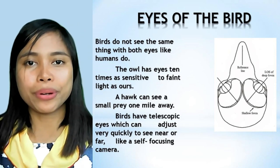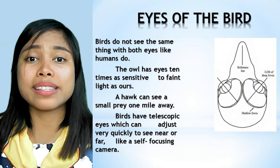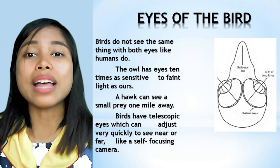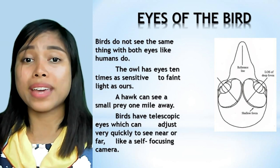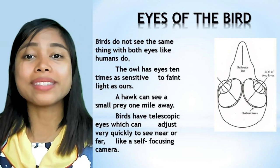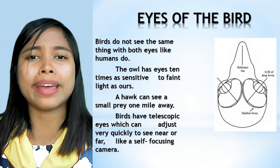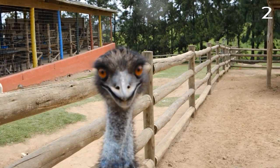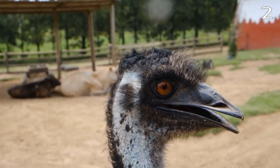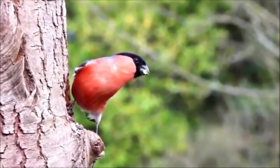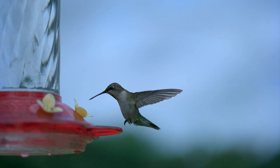Birds do not see the same thing with both eyes simultaneously, unlike humans. The owl has eyes ten times as sensitive to faint light as ours. A hawk can see small prey from one mile away. Birds have telescopic eyes that can adjust very quickly to see near or far, like a self-focusing camera. The bird's eyes are so large that the brain is squeezed to the rear of the skull — in many birds the eyes weigh more than the brain. Some birds have a third eyelid that acts like a windshield wiper as the bird rushes through the sky.